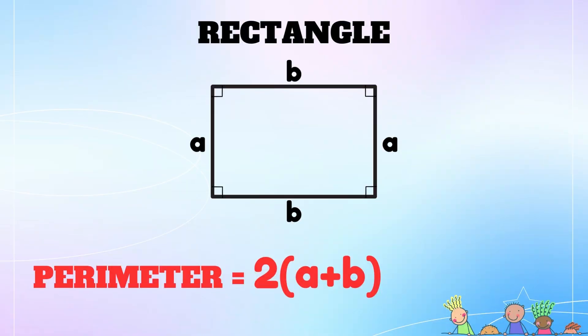Rectangle. A rectangle has two pairs of equal sides. Therefore, to find the perimeter of a rectangle, the formula will be a plus b plus a plus b. That equals 2a plus 2b, and if we simplify it further, we'll get 2 times a plus b in parentheses.